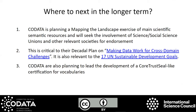Where are we going in the longer term? From a CODATA background, they are planning a mapping-the-landscape exercise of semantic resources and will seek involvement from science, social science unions, and other relevant societies for endorsement. It's critical to their decadal plan and also relevant to anyone working in the sustainable development goals. CODATA is also planning to lead the development of a CoreTrust-like seal certification — not the one for repositories, but something similar for vocabularies and for endorsement. That was an aside on what we're doing to try to communicate to users things they should think about when choosing a vocabulary, without going to the drastic step of ARDC saying this is the one you should choose — it should be up to the user and their use case.